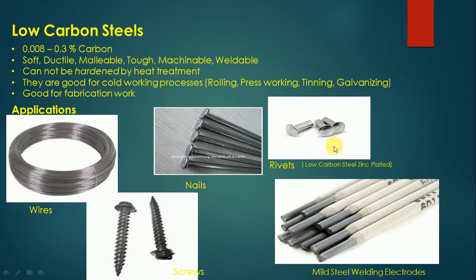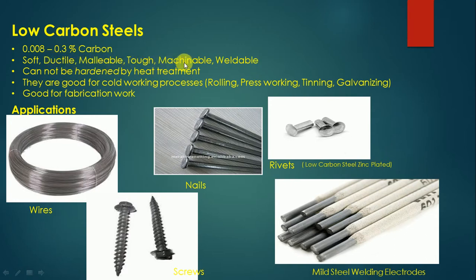Applications of low carbon steel: having 0.008% to 0.3% carbon, it is the purest form of iron available. Alpha ferrite is the prominent phase, so low carbon steels are soft, ductile, malleable, tough, machinable, and weldable.